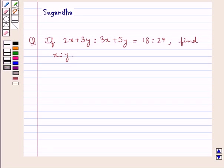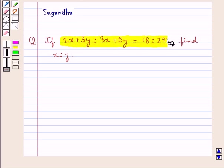Hello and welcome to the session. In this session we discuss the following question which says if 2x plus 3y is to 3x plus 5y is equal to 18 is to 29, find x is to y.